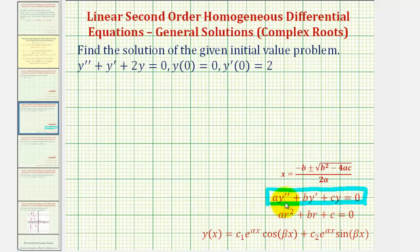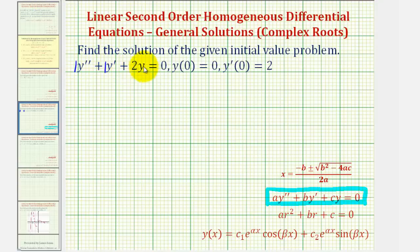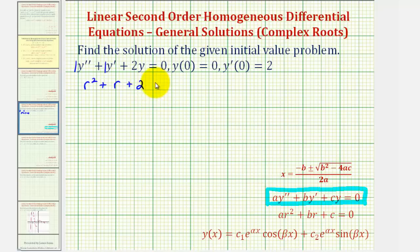Let's start by setting up the characteristic equation. Notice that a is one, b is one, and c is two, so we would have r squared plus r plus two equals zero.